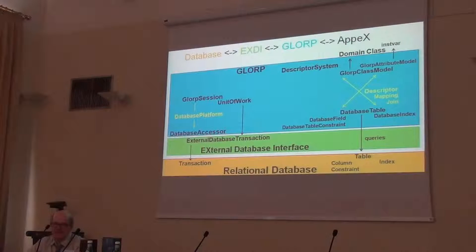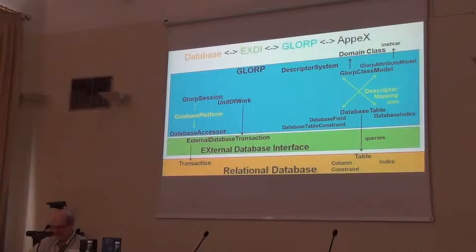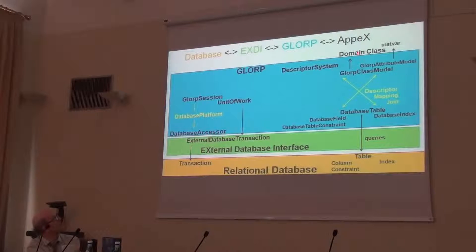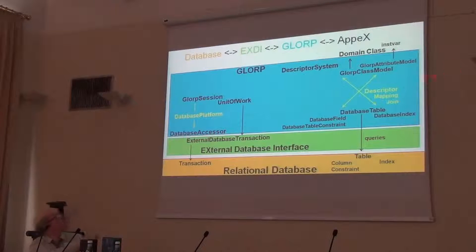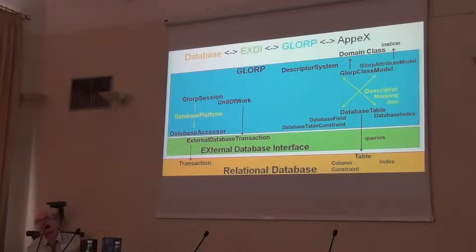Okay, so this is what it looks like in the image — a very quick reminder of how it works. In the talk, I will be going up the right side of the diagram, basically generating from the database towards somewhere where Jerry will continue. The idea is: in order to do this mapping, it has to model the database, it has to model the domain, and it has to do the mapping between the two.